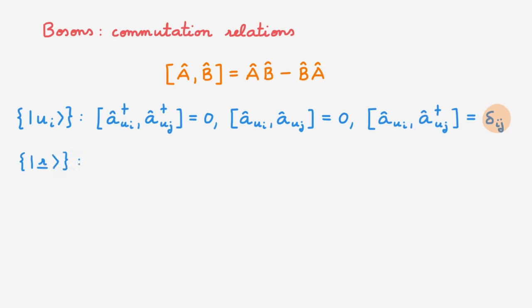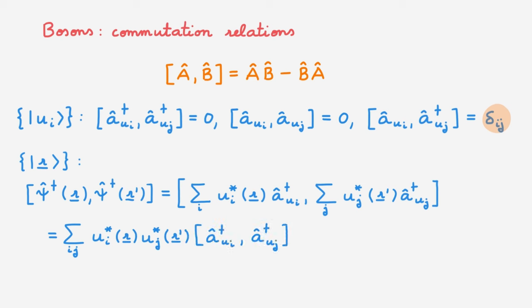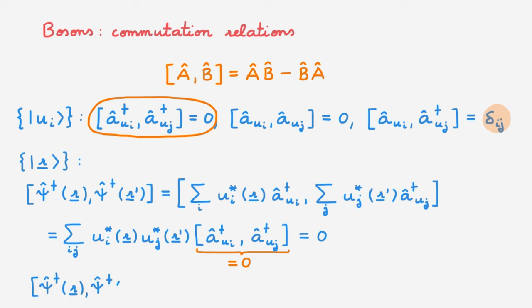We next move to the position representation and consider the commutator of two creation field operators at r and r'. Using the usual expression for these field operators in terms of creation operators in the u basis, we get the commutator of a sum over creation operators in the u basis with another such sum. Using the standard rules of commutators, we rewrite the commutator of the sum as the sum of the commutators. These commutators are just the usual commutators in the u basis, and using the result above, we see that they vanish. So the commutator of two creation field operators vanishes. Using a very similar procedure, we can show that the commutator of two annihilation field operators also vanishes.